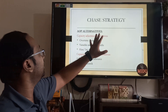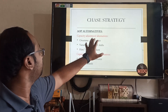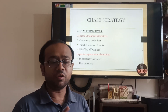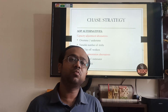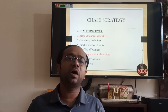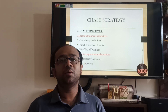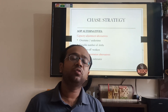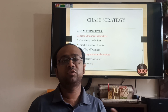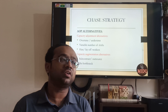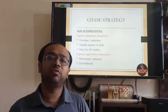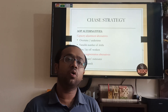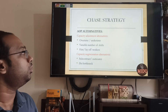In Chase Strategy there can be various alternatives, and there are two types: capacity adjustment and capacity augmentation. For capacity adjustment, the first measure is overtime and under-time — whenever there is more requirement you give overtime, asking workers to work 10 hours instead of 8; when demand is down, workers work only 6 hours (under-time). Second is variable number of shifts — in peak periods you may run 3 shifts, in lean periods only 1 shift. Third is hiring and laying off workers — when you need more output you hire, when you need less you fire.